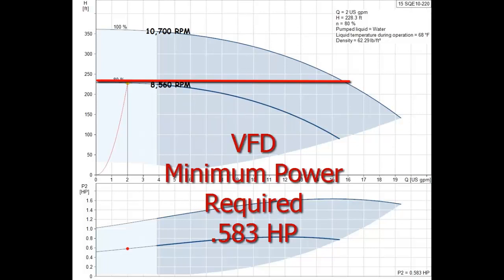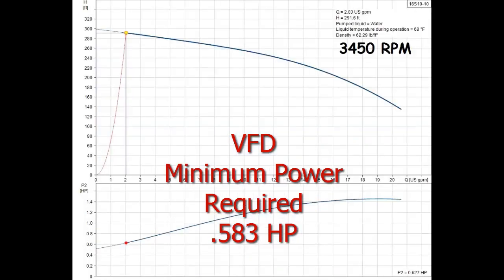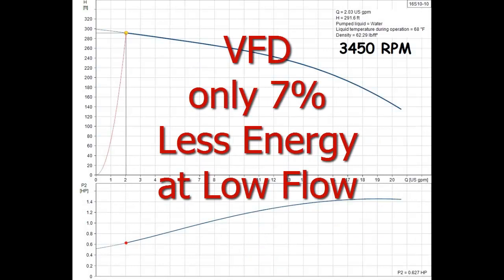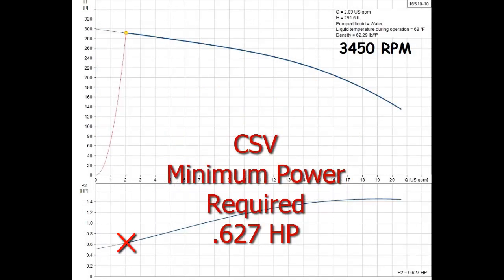Since 0.583 horsepower is the least energy use possible with a variable speed pump, there is only a 7% difference in the 0.627 horsepower needed by simply restricting a normal full speed pump with a cycle stop valve or CSV.